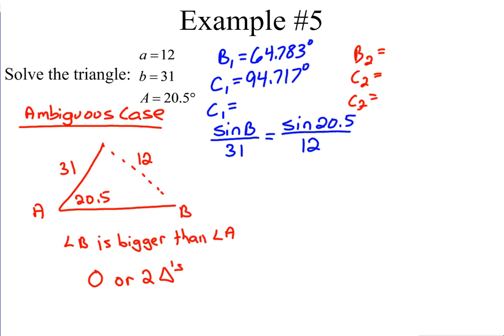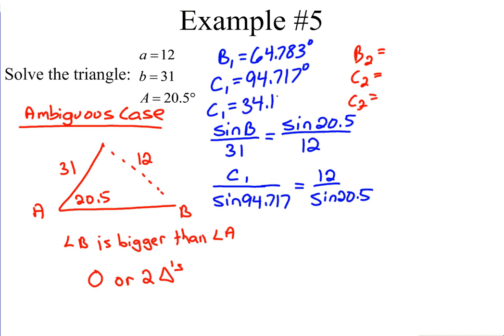Finishing the first triangle: side C1 over sine 94.717 equals 12 over sine 20.5. Solving that gives C1 = 34.149 units. Those are the three missing measures for triangle one, along with the three values we were originally given.